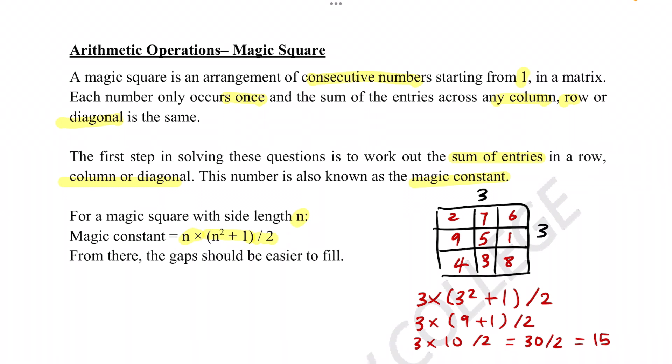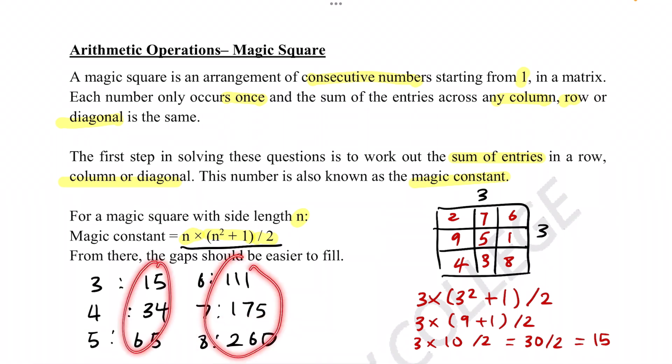One more thing to note before we move on to examples is, if you're not really bothered to memorize these formulas, then what you can do is memorize the magic constants. For every length of 3, it'll be 15. For length 4, it'll be 34. 5, it'll be 65. 6, it'll be 101. 7, it'll be 175. And 8 sides will be 260. It shouldn't really go further than that because after that will be quite tedious to solve. But of course, since they're quite big numbers, if you forget it, you can always just remember the formula and insert it in. So let's do some examples, shall we?